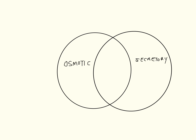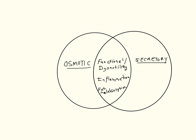Watery diarrhea is often further subdivided clinically into secretory and osmotic subtypes, which is also useful because these are considered the two fundamental pathophysiologies for all diarrhea. Any cause of chronic diarrhea is ultimately related to one of these two mechanisms, or a complex blend of the two, such as the groups mentioned here.